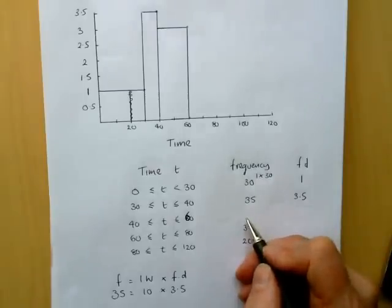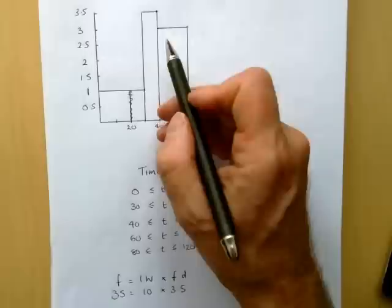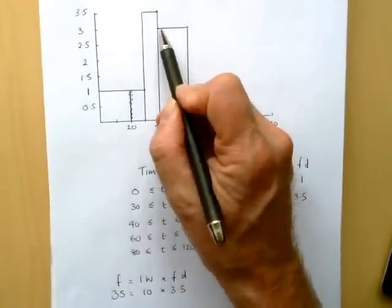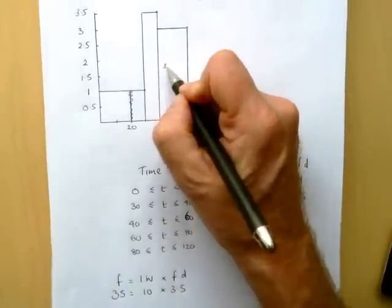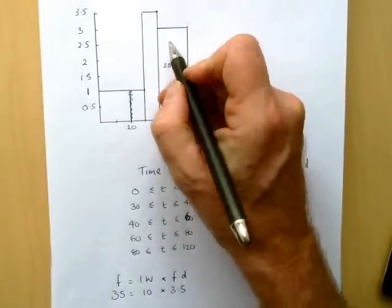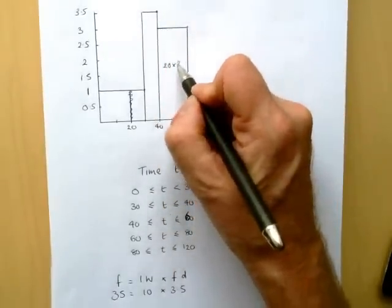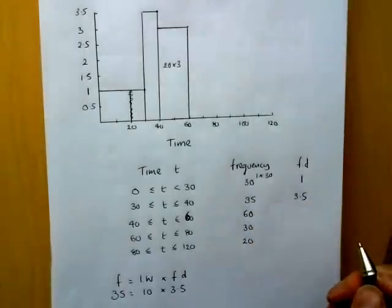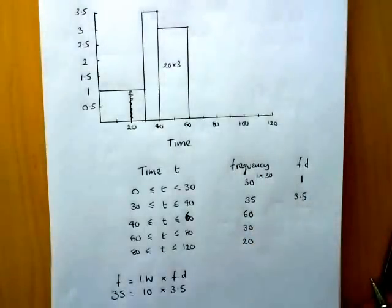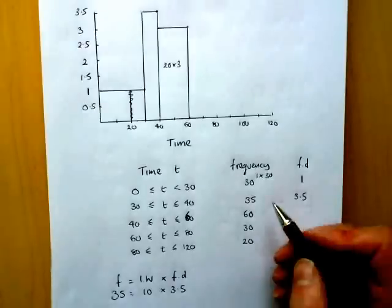The next one, 40 to 60, has an interval width of 20. So this one's going to be 20 times the height of 3, giving a frequency of 60. So that fills in the missing frequencies into the table.